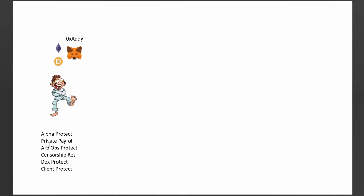The second use case is private payroll systems. Say you have a DAO or a company and you have to pay everybody — if you do it on the blockchain then everybody can see what everybody else's salary is. With a private payroll system through here, you can protect that. Third is arb opportunity protection: if you build bots for arbitrage or MEV, you don't want people to see what you're doing, copy you, and follow you.